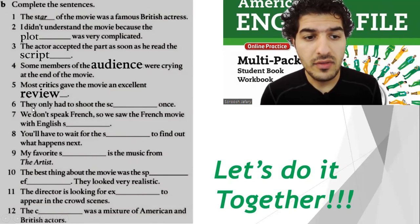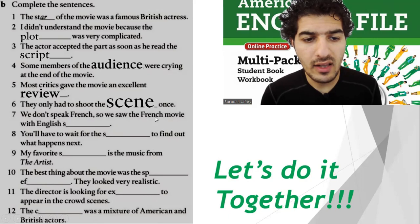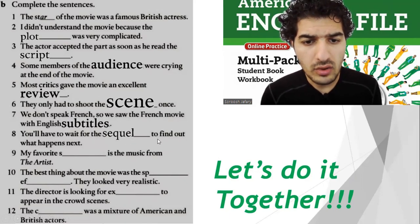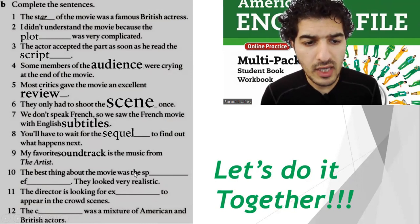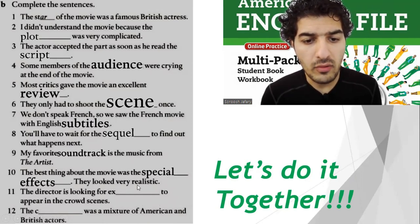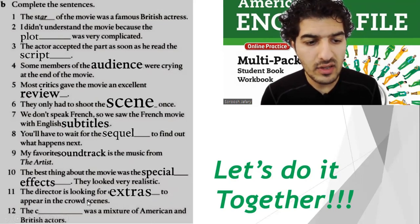Number five: most critics gave the movie an excellent review. Number six: they only had to shoot the scene once. Number seven: we don't speak French so we saw the French movie with English subtitles. Number eight: you'll have to wait for the sequel to find out what happens next. Number nine: my favorite soundtrack is the music from The Artist. Number ten: the best thing about the movie was the special effects and it looked very realistic. Number eleven: the director is looking for extras to appear in the crowd scenes.